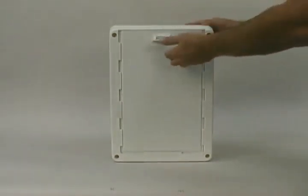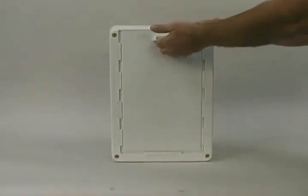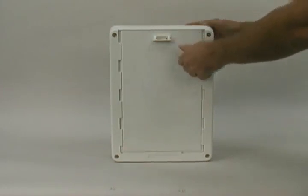The telescoping structural foam plastic frame adjusts to fit most door thicknesses from three quarter to one and three quarter inches.